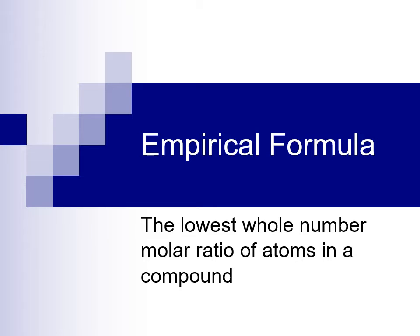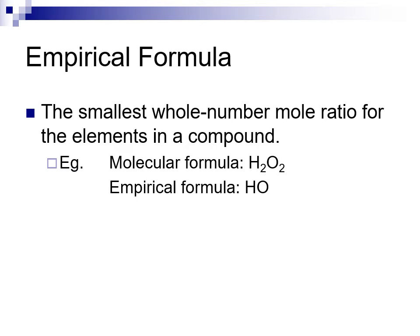Empirical formula. This is the lowest whole number molar ratio of atoms in a compound. So if you have the formula of a compound — let's say it's hydrogen peroxide — the formula for hydrogen peroxide is H2O2. But the empirical formula for hydrogen peroxide is that expressed in its lowest whole number ratio, so it would just be 1H and 1O.